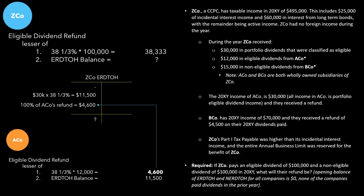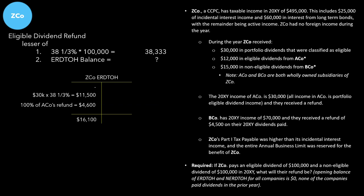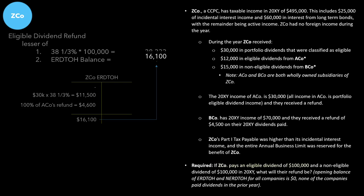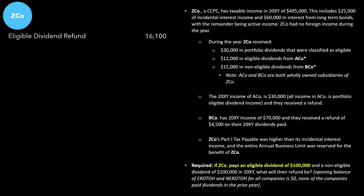Adding up the amounts in ZEDCO's eligible RDTOH account: opening balance of zero, plus $11,500, plus $4,600 gives a total of $16,100. We can plug that into the calculation we were solving. The eligible dividend refund for ZEDCO is the lesser of 38⅓% × $100,000 = $38,333, compared to the eligible RDTOH balance of $16,100. The lesser of those two amounts is $16,100, which will be the eligible dividend refund for ZEDCO.